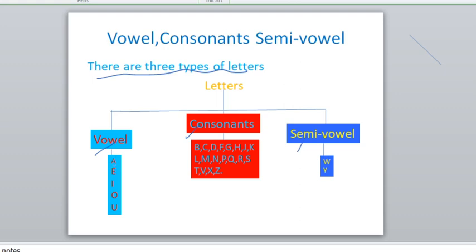And consonant has 19 types of letters: B, C, D, F, G, H, J, K, L, M, N, P, Q, R, S, T, V, X, Z.